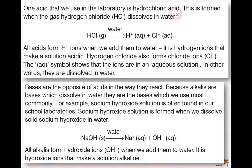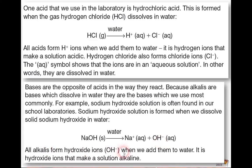One acid used in the lab is hydrochloric acid, formed when hydrogen chloride gas dissolves in water: HCl(g) → H⁺ + Cl⁻. All acids form H⁺ ions when added to water, and it's the hydrogen ions that make a solution acidic. The bases are opposites of acids in how they react, since alkalis are bases that dissolve in water. Sodium hydroxide is often used in school labs: NaOH(s) dissolved in water gives Na⁺ + OH⁻. All alkalis form OH⁻ ions when added to water, and it is the hydroxide ions that make a solution alkaline.